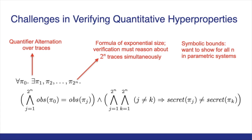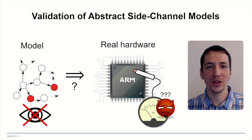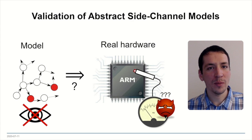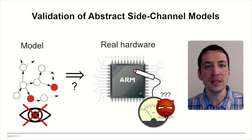Our work deals with the validation of side channel leakage models for processors. As shown in the soundness visualization, predicted zero leakage in the model has to imply zero gain for an attacker using the actual side channel. But because of the complexity of modern processors, it is hard to verify whether the widely used side channel models are indeed sound abstractions or not. So it is not too surprising that regularly new attacks emerge and break established side channel abstractions.